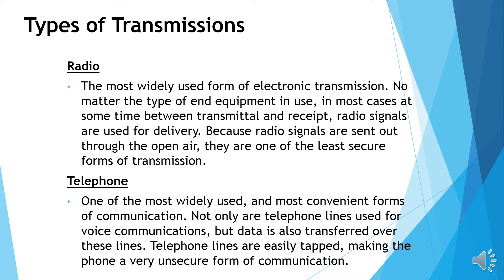These are the types of transmission. We have radio. Radio is the most widely used form of electronic transmission, no matter the type of end equipment in use. In most cases, at some time between transmittal and receipt, radio signals are used for delivery. Because radio signals are sent out through the open air, they are one of the least secure forms of transmission.